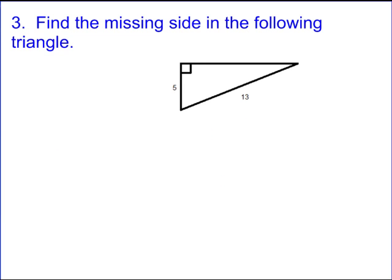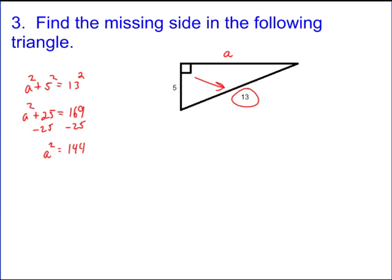Number three: find the missing side of the following triangle. This one is different because the long side, thirteen, is the hypotenuse, and you're asked to find one of the missing sides, which we'll call A. So A squared plus five squared equals thirteen squared, which means A squared plus twenty-five equals one hundred sixty-nine. By equation principles, we can subtract twenty-five from both sides to get A squared equals one forty-four. The square root of one forty-four is twelve. So twelve is the missing side on this problem.